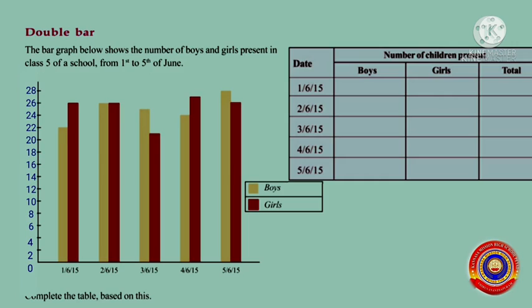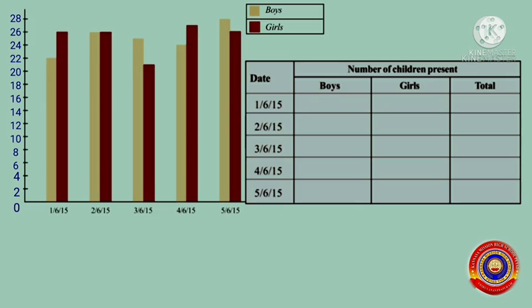In this graph, the yellow bar shows the number of boys and the red bar shows the number of girls. We have to complete this table based on this graph. According to the height of each bar, we can easily find out the number of boys and girls present on each day, and the total gives the number of children present on each day.